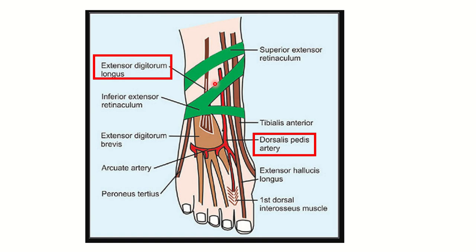Here we can see the superior extensor retinaculum and the Y-shaped inferior extensor retinaculum. The dorsalis pedis artery originates from the anterior tibial artery and passes below the inferior extensor retinaculum. Two important points: the dorsalis pedis artery lies lateral to two important muscles and medial to another important muscle.